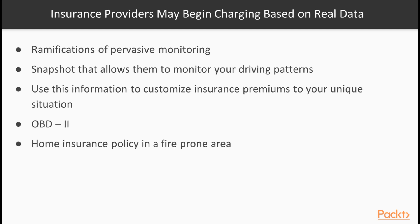Let's talk about some of the ramifications of pervasive monitoring. Progressive Insurance has a product known as Snapshot that allows them to monitor your driving habits and patterns — including when you drive, how much you drive, and even how much force you use to brake. They can use this information to customize insurance premiums to your unique situation. These devices fit directly into your OBD-II port on your car, giving them potential access to lots more information as well.